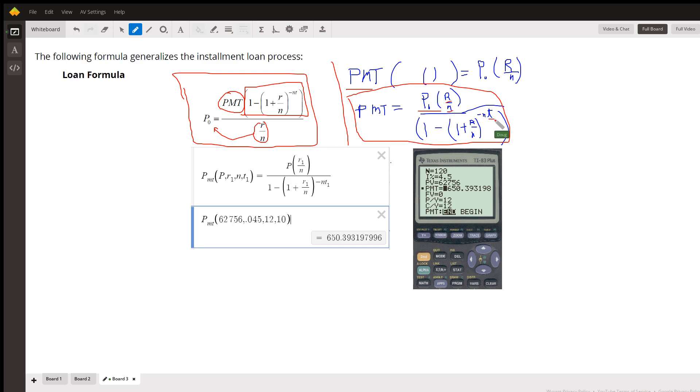And so here I kind of created a function on Desmos to do that calculation. And if I pass in those values, it looks like the payment per month is going to be $650. And you can see in the TVM solver I got the same thing. Now how does that TVM solver work?